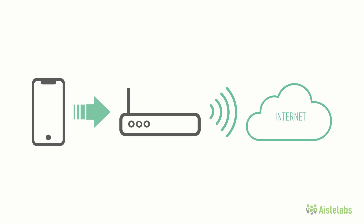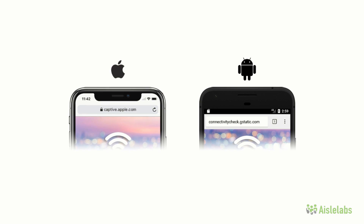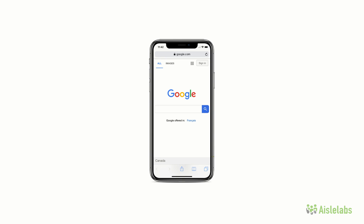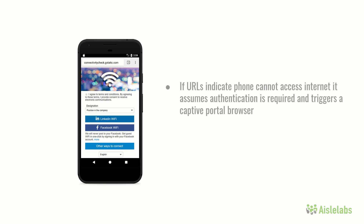Here's how a phone knows it is connected to the internet. Android phones will check through Google's connectivitycheck.gstatic.com URL, while Apple iPhones will try to confirm access to the World Wide Web via captive.apple.com. If these URLs confirm access to the internet, a user will be able to surf automatically. If these URLs indicate that a mobile device cannot access the internet, then it can reasonably assume that some form of authentication is required and a special captive portal browser is displayed.